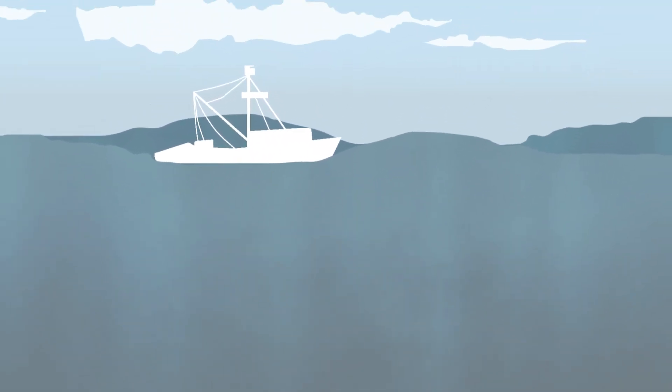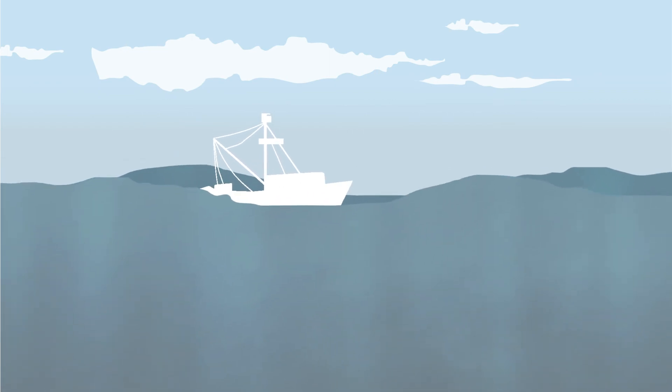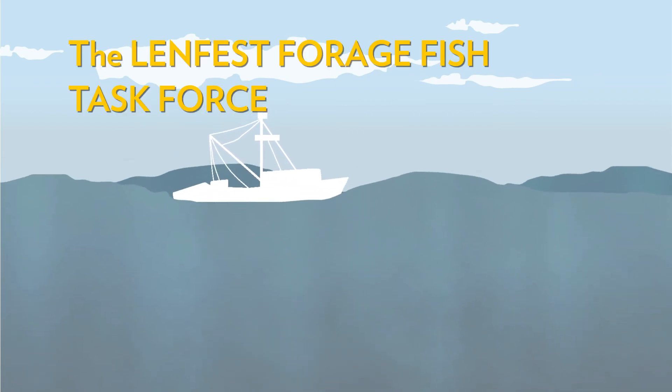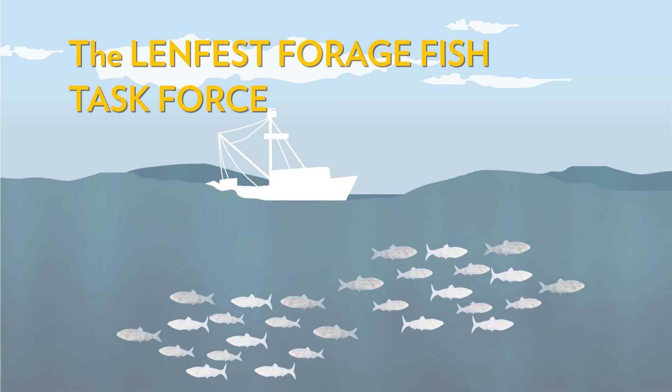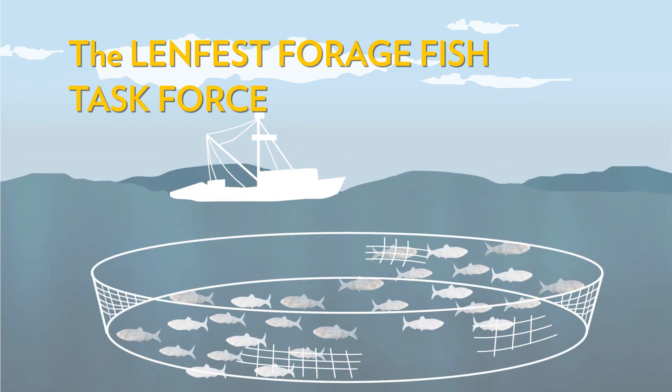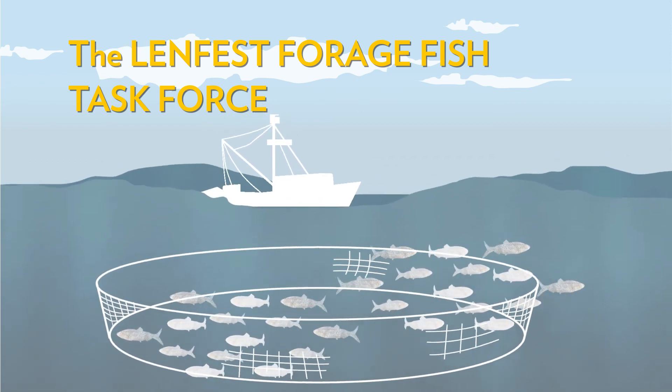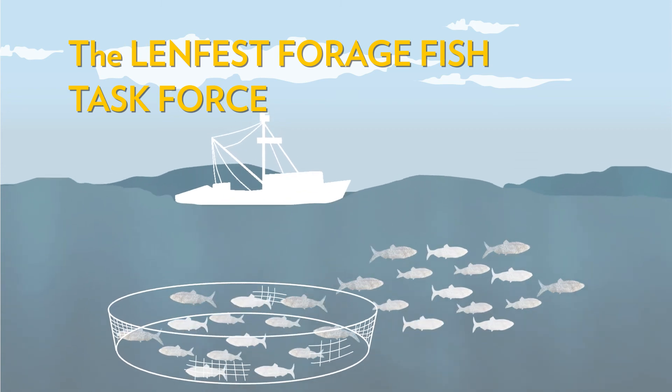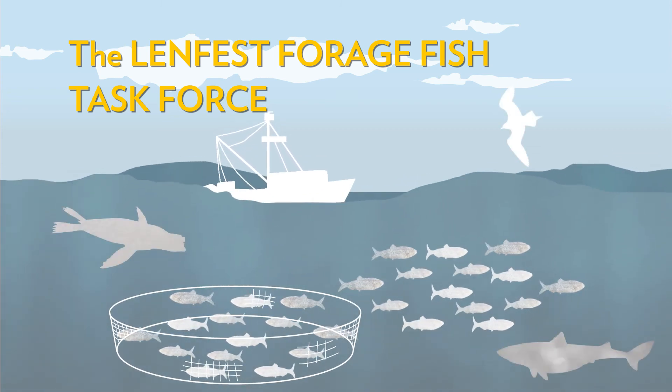Even when predators can't be included in a model, fisheries managers can still take them into account. The Lenfest Forage Fish Task Force recommends that when a predator-prey relationship is unclear, fishing on the prey species should be reduced by 50% or more compared to conventional levels to help protect both predators and prey.